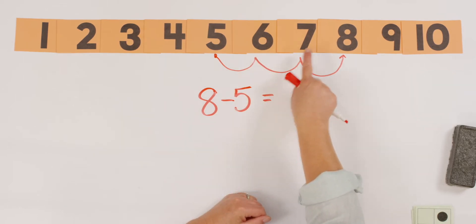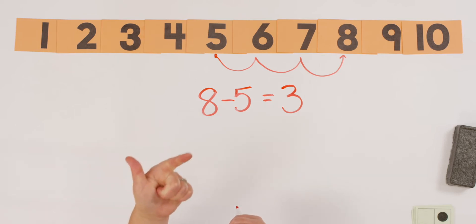How many hops was it to get to 8? 1, 2, 3. So 8 minus 5 equals 3. Or I started with 5 and I counted on 3 more to get to 8: 5, 6, 7, 8. 3 fingers. Let's do one more together.